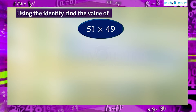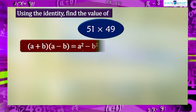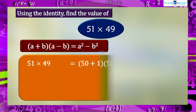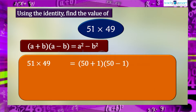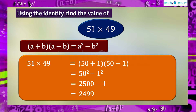Using this identity, find the value of 51 multiplied by 49. Applying (a+b)(a-b) = a²-b²: 51×49 = (50+1)(50-1) = 50²-1² = 2500-1 = 2499. That is, 51×49 = 2499.